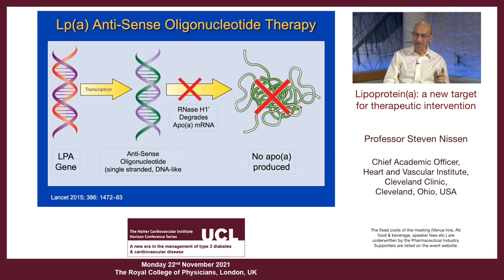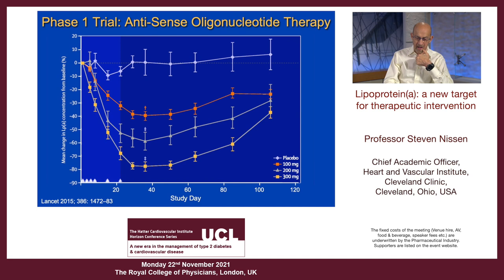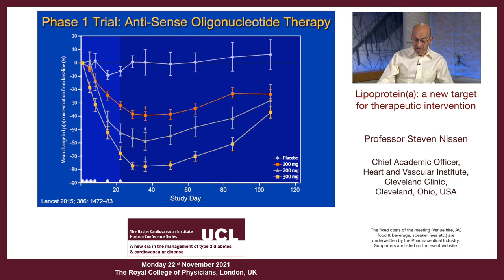This is an ASO — an antisense oligonucleotide — originally developed by Isis Pharmaceuticals in San Diego, California, who later changed their name to Ionis Pharmaceuticals. The phase one trial published in The Lancet showed that big doses, in this case 300 milligrams, produced about an 80% reduction in lipoprotein A levels. However, you had to give the drug fairly frequently and in large amounts to get these levels of reduction, and it has to be given parenterally. There is a dose-dependent response.